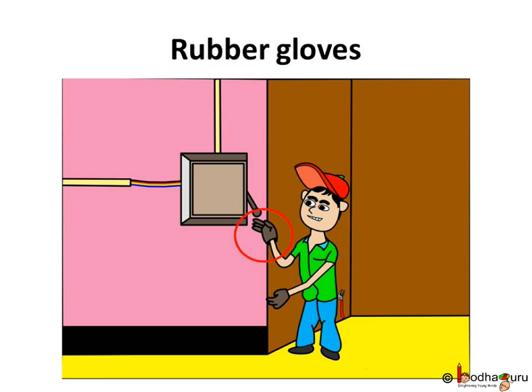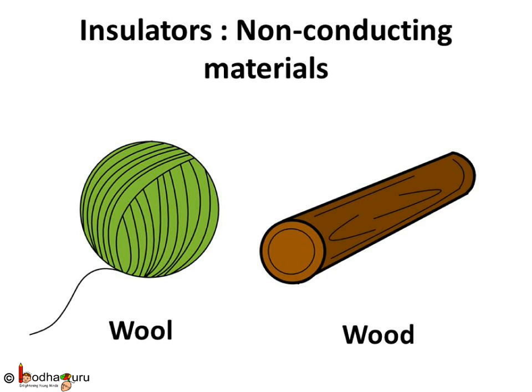Do you know why electricians wear rubber gloves while working with electric instruments? Electricians wear rubber gloves because rubber doesn't allow electricity to flow through it, and they wouldn't get an electric shock. So the materials like rubber, plastic, wood, etc. don't allow electric current to pass through them. These are called non-conductors, or also known as insulators, as they insulate us against electricity.